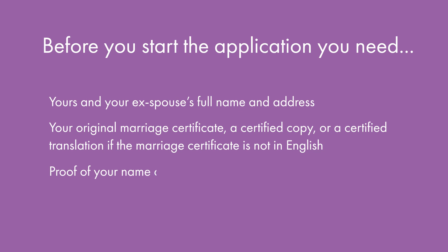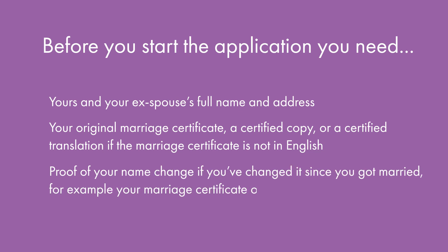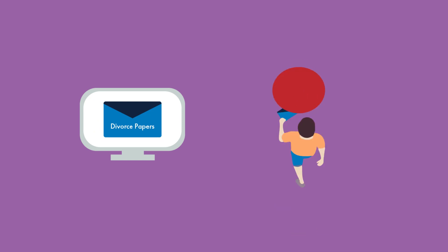a certified copy or a certified translation if the marriage certificate is not in English. 3. Proof of your name change if you've changed it since you got married, for example your marriage certificate or a deed poll. You will be asked for your ex-spouse's current address so the court can send them a copy of the divorce application. If you do not know your ex-spouse's current address, there will be additional steps you need to take. If you provide your ex-spouse's email address, the court will send the divorce papers online. If you do not provide an email address, the papers will be sent via post.